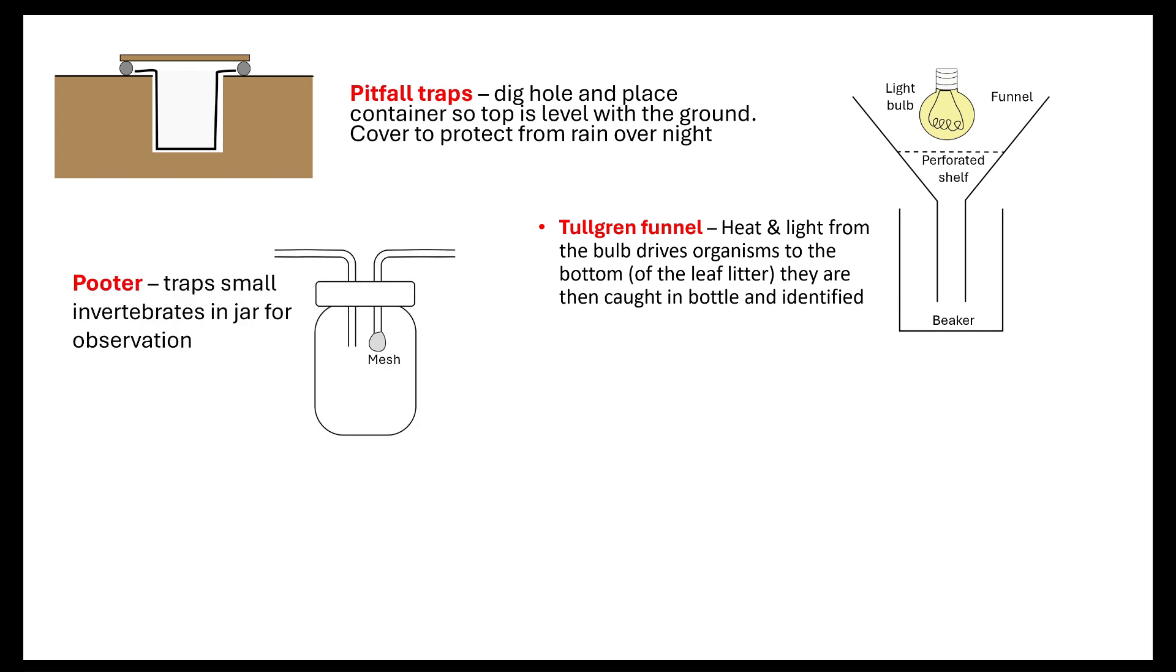You can use what's called a pooter, another form of a piece of equipment that you could use where you're wanting to trap small invertebrates. What we do with that is there is a straw where you're going to suck the air. That air is going to be sucked and moved into your mouth. You do not want to suck in the insects so therefore it has a mesh surrounding it to ensure that with you sucking that's going to pull the insects, these are normally very small invertebrates, in through the other tube down to the jar where you're going to observe them and then release them and put them back out.